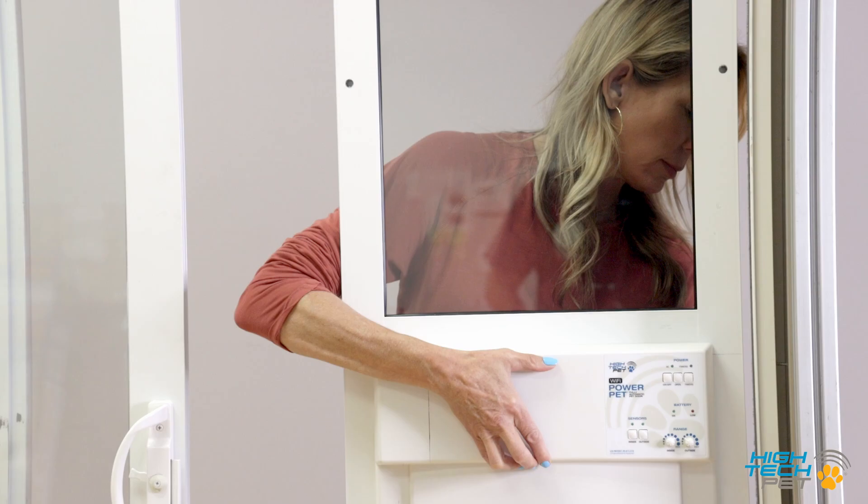Now insert the lock hasp into the door lock assembly. By turning the door lock knob the hasp will be locked onto the door lock assembly.